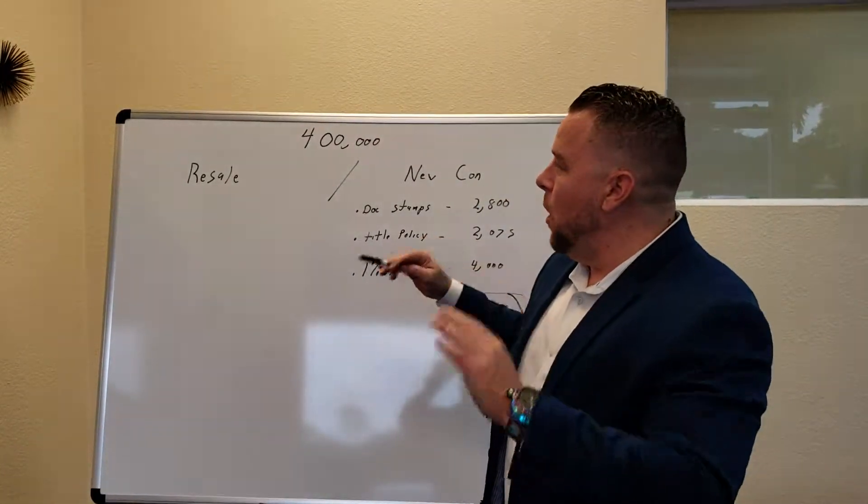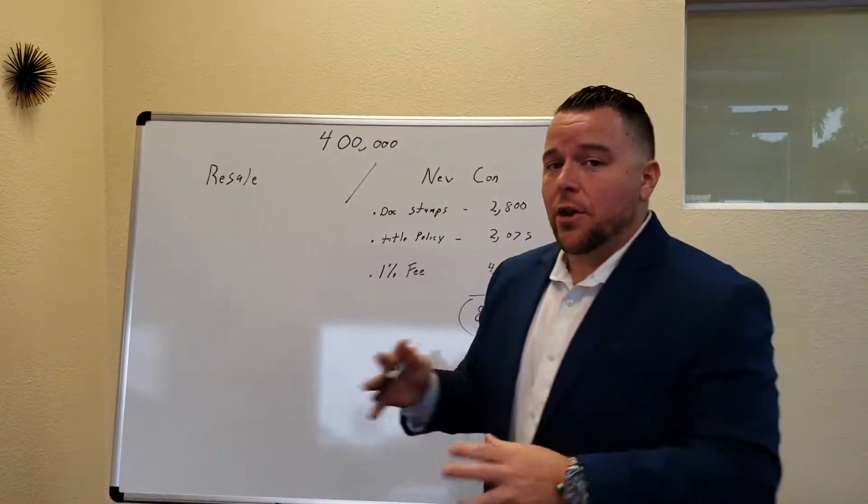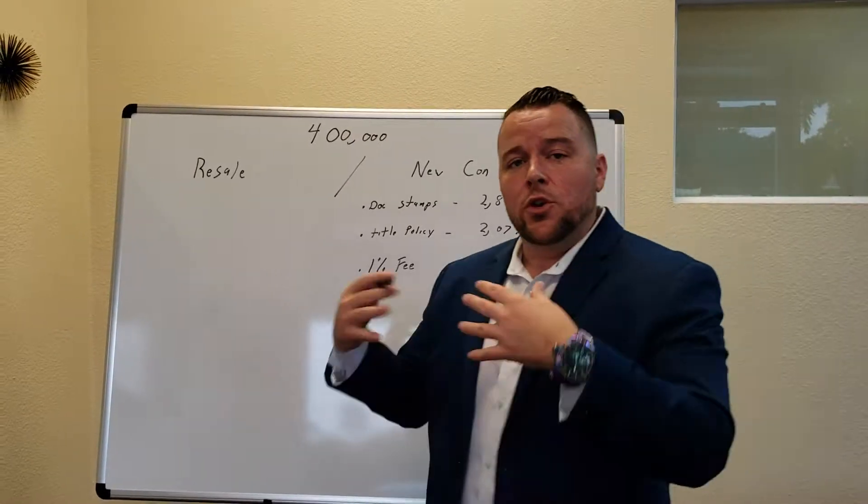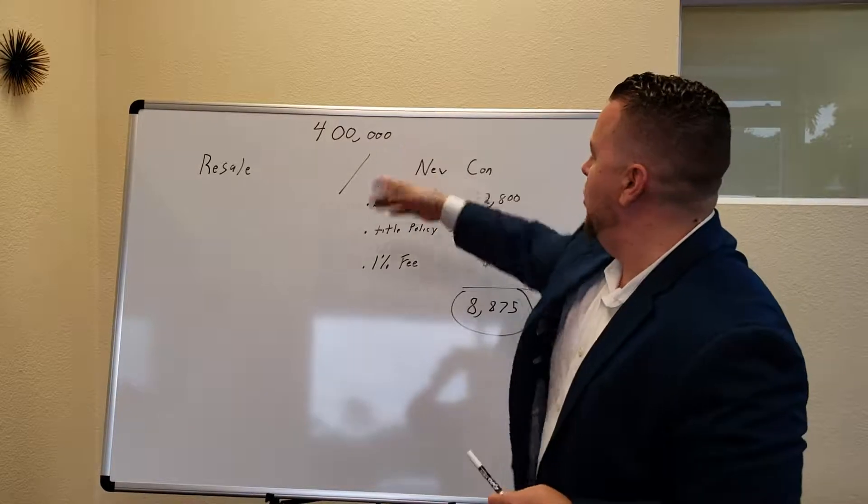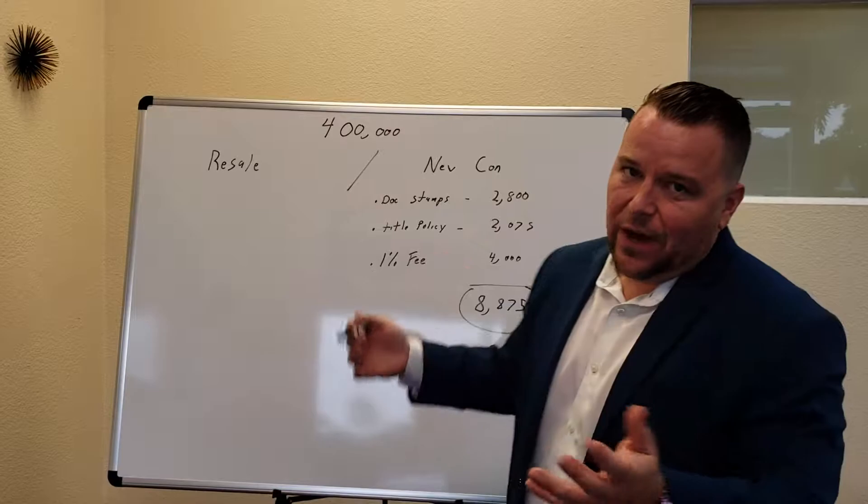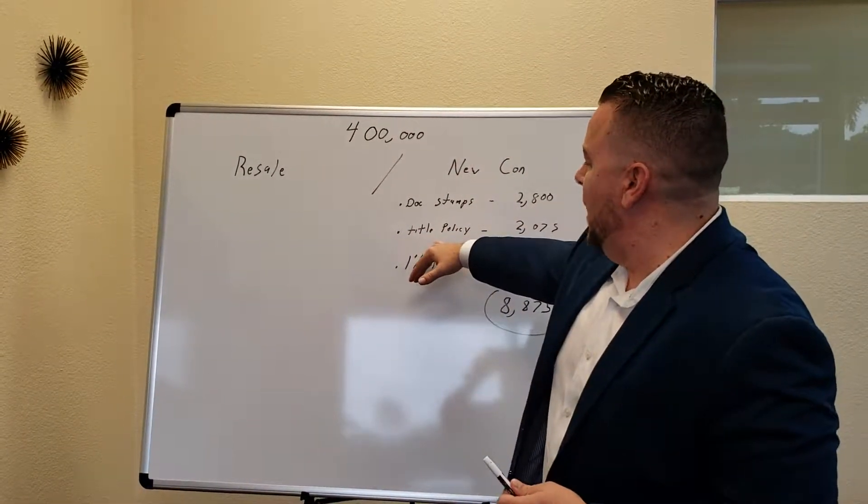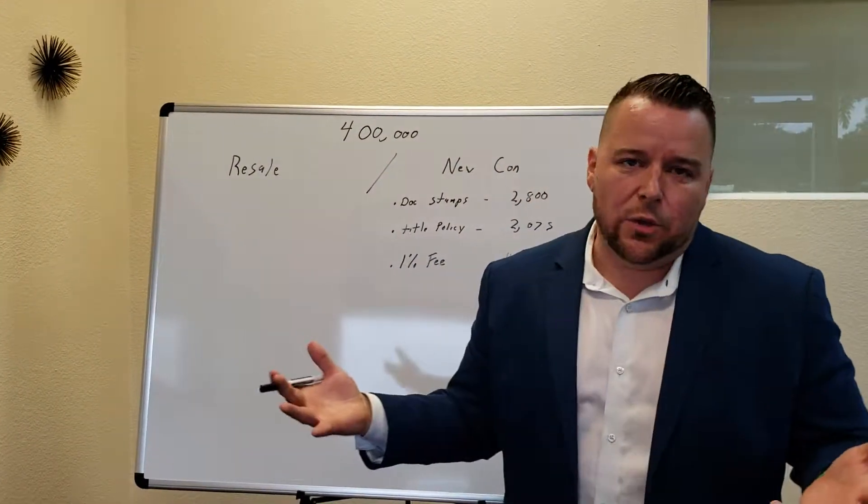Okay, let's just go $400,000 house. When you buy a resale, there are things that the owner is in charge of and there are things that you're in charge of. When you buy a resale, the owner is going to pay their doc stamps. So on $400,000 is $2,800. The owner is going to pay their title policy, which is $2,075. Basically, the doc stamps are your taxes. The title policy is to cover you if, God forbid, anyone from the past comes and says they own the house.